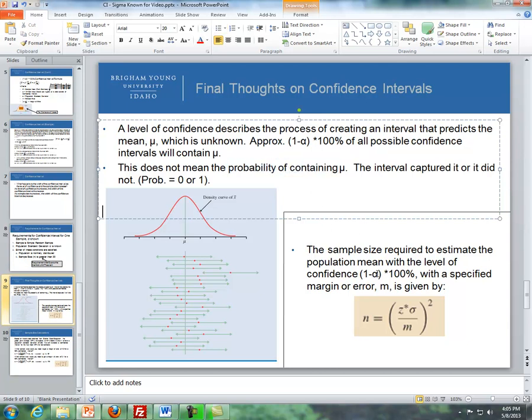The sample size required to estimate the population mean with a level of confidence of 1 minus alpha times 100% with a specified margin of error is given by this formula: the critical value z times the standard deviation sigma, divided by the desired margin of error m, all squared.